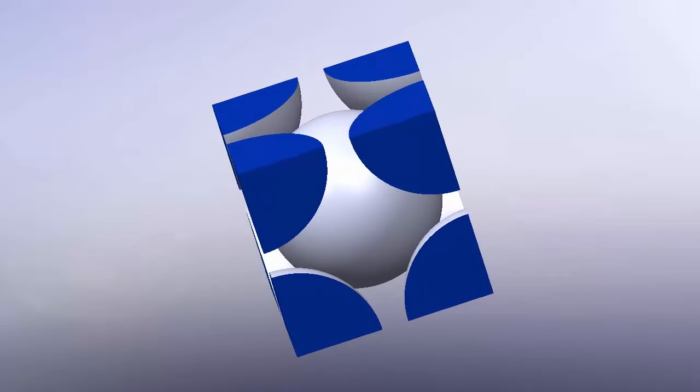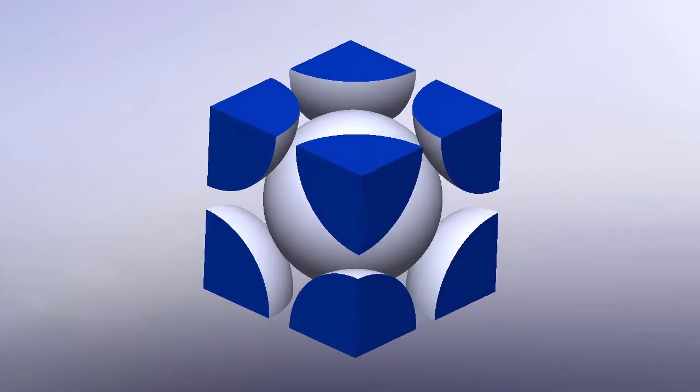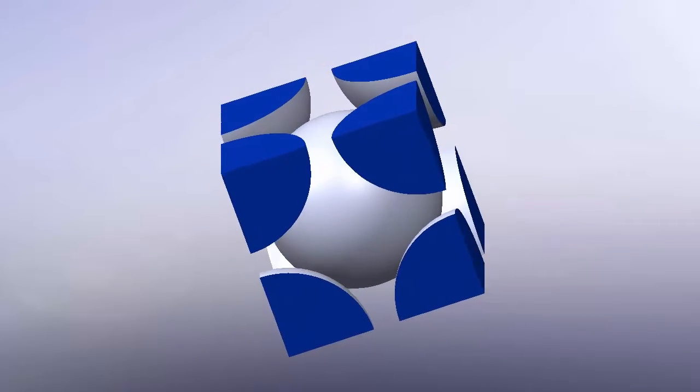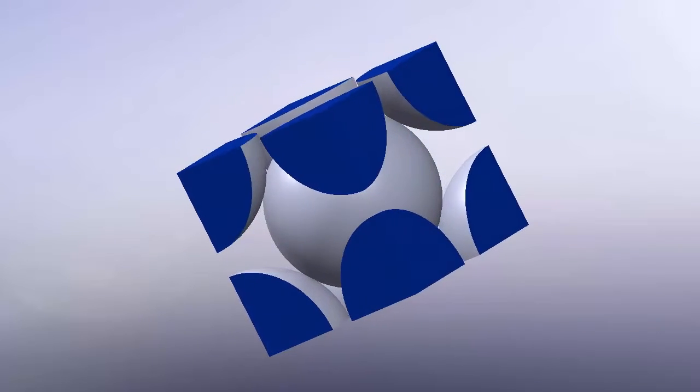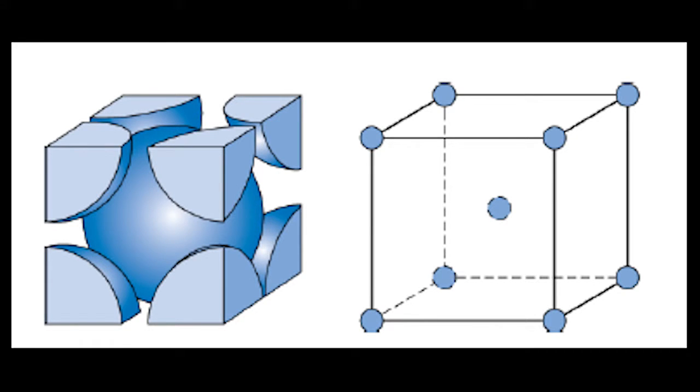What is the n value? The n value represents the total number of atoms in a unit cell. If we look at this BCC unit cell, we can see that there is an eighth atom in each of the eight corners. Also, a whole atom in the middle.